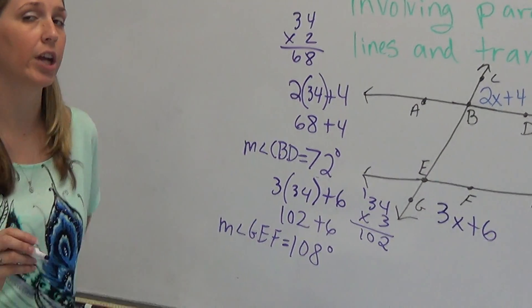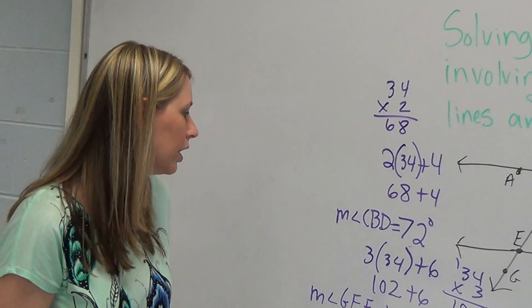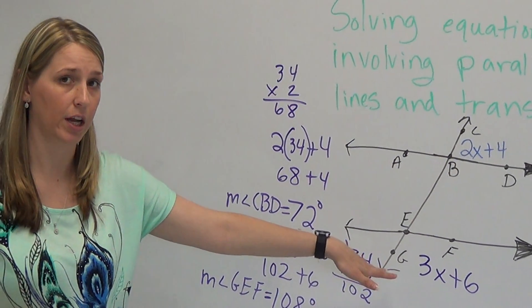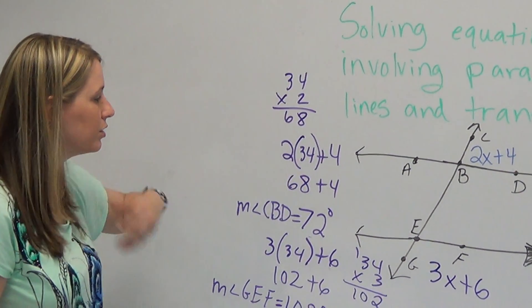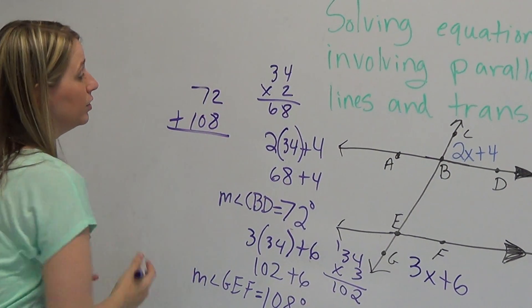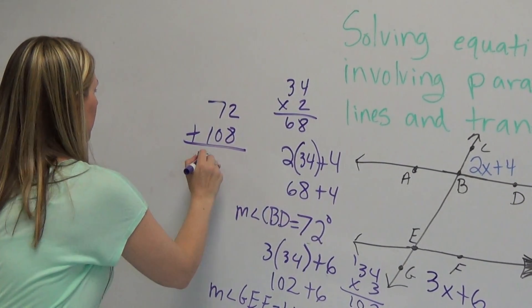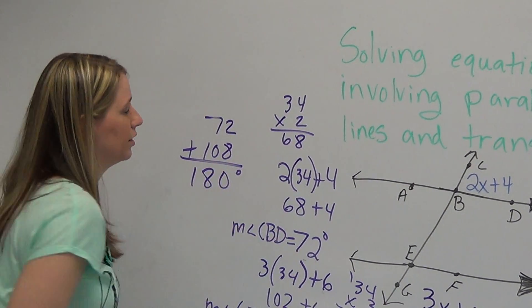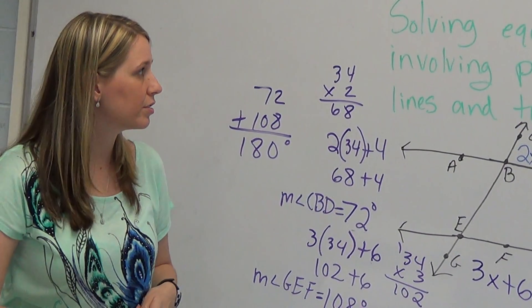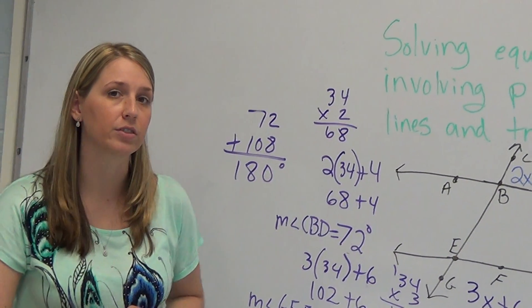Now, there's an easy way to check yourself to make sure you're correct. We know that they're supplementary, which means they have to add to be 180, right? So if you add these two things together, 72 plus 108, do you get 180? And the answer is yes, you do. So they are supplementary. Your answer does make sense. And that's solving equations involving parallel lines and transversals.